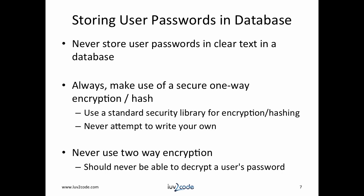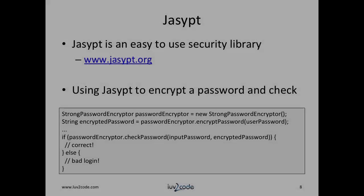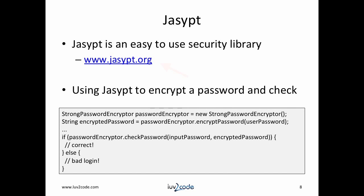When storing user passwords in a database, there are a couple of rules you need to follow. The first thing is that you never store user passwords in clear text in the database. Always make use of a secure one-way encryption or hash. You should use a standard security library for performing the encryption and hashing. Never attempt to write your own hashing or encryption algorithm, and never use a two-way hash — you should never be able to decrypt a user's password. You can make use of jzip, which is an easy-to-use security library available from jzip.org.